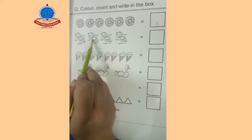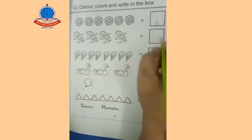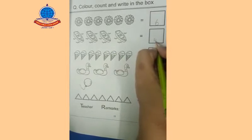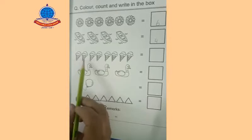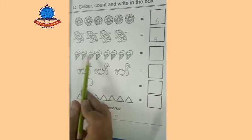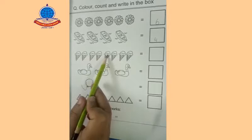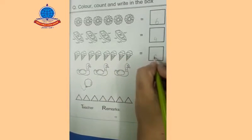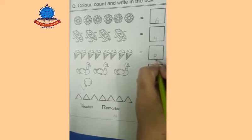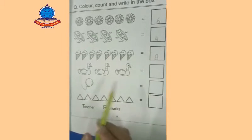And our next objects are ice cream cones. Let's count with me: 1, 2, 3, 4, 5, 6, 7, 8. Write 8 here.